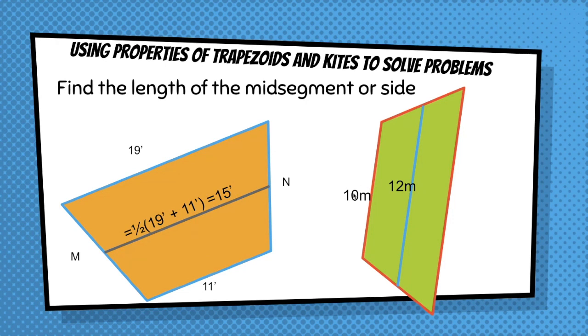In this case, 10 plus x divided by 2, that quantity divided by 2, would be equal to 12, where 10 plus x equals 24. Subtracting 10 from both sides, you get x equals 14. And don't forget your units, 14 meters.